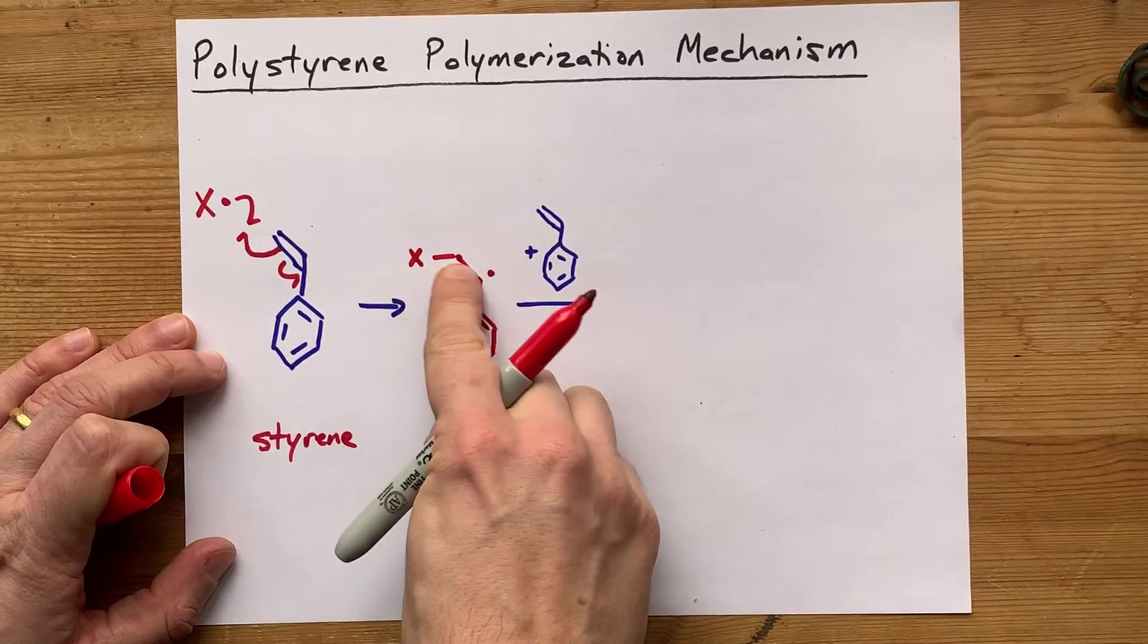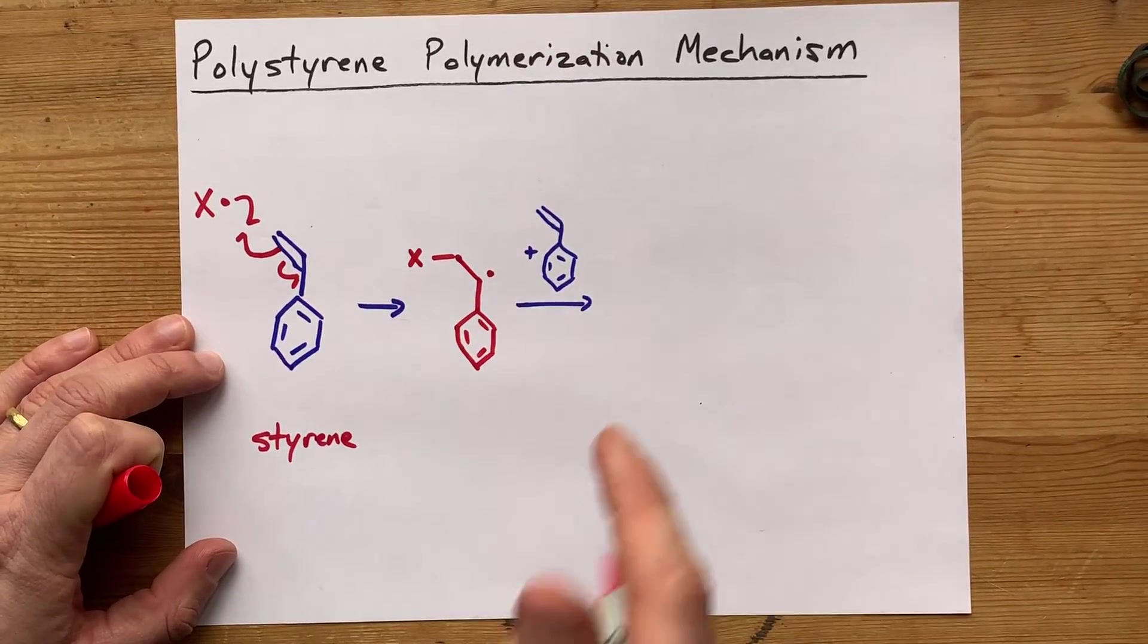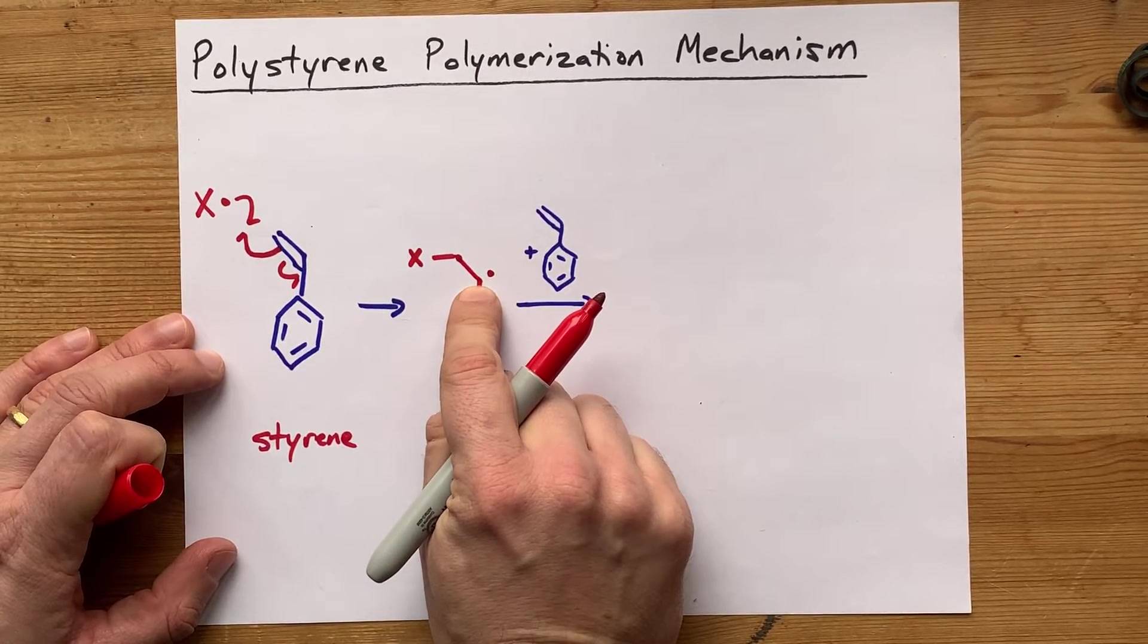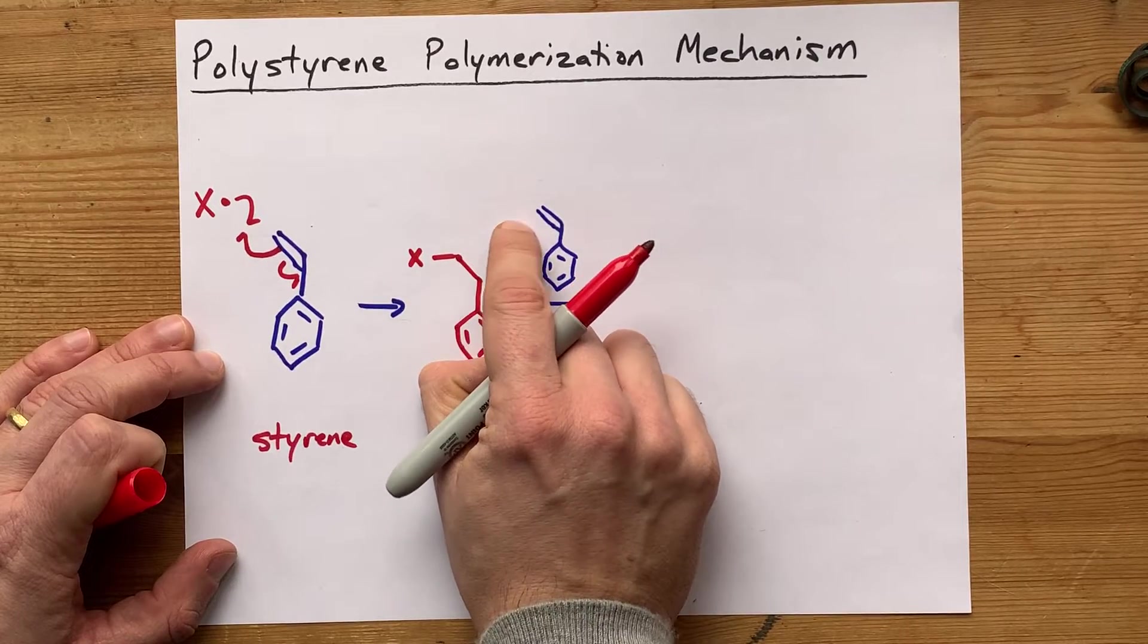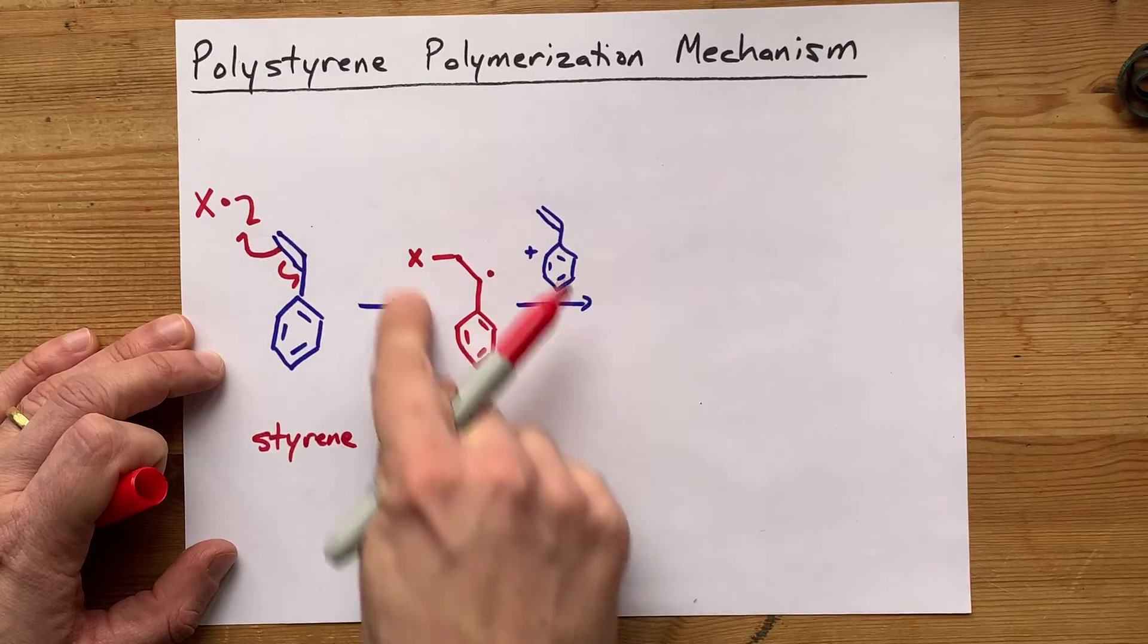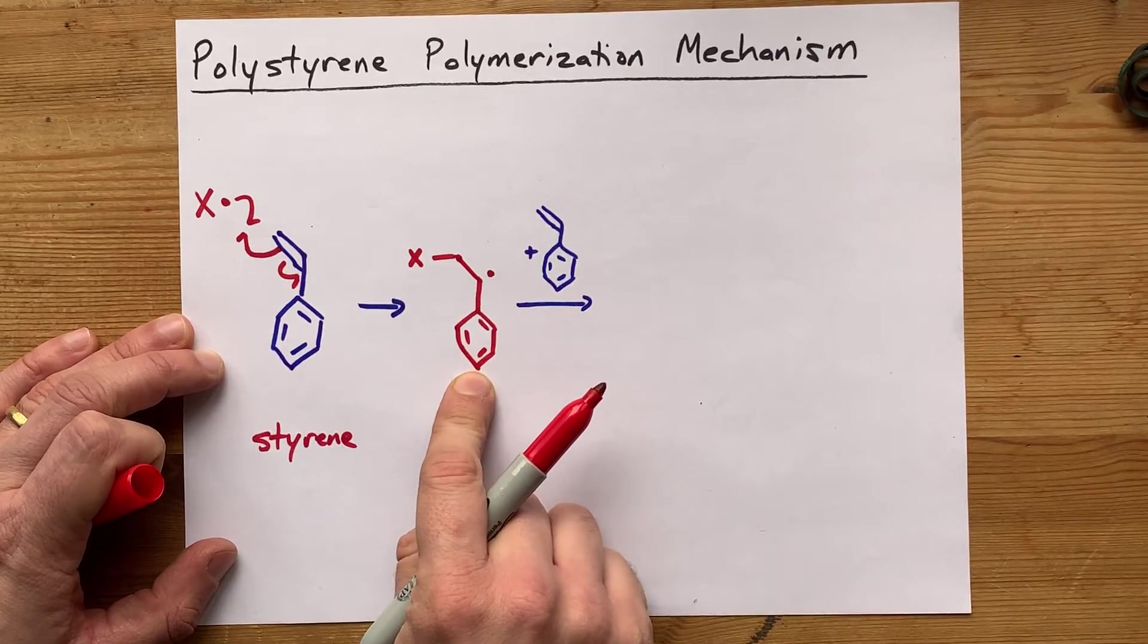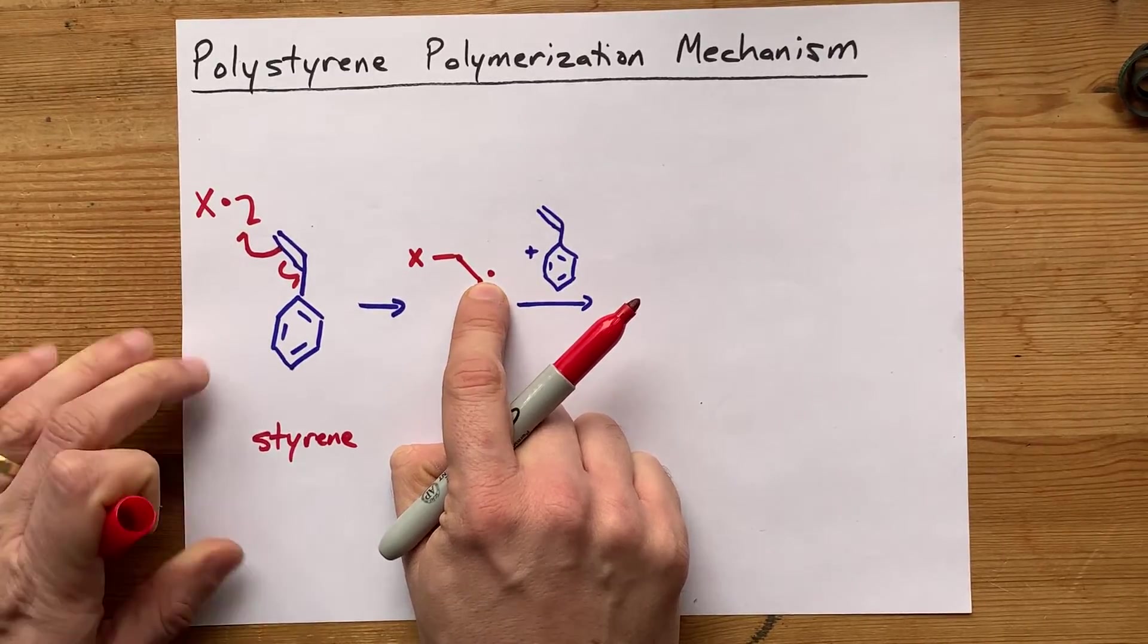This doesn't look like a polymer yet because we have to include many monomers to create the polymer. What I want to point out is that this free radical is also strong enough to help break apart the double bond of the next molecule. So this molecule, which now is the X with a styrene attached to it, is going to play the exact same role that this free radical initiator did.